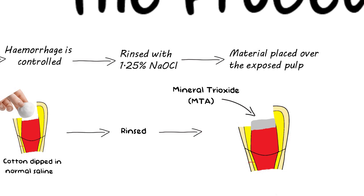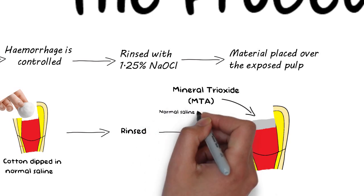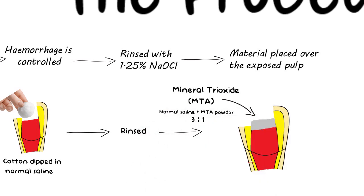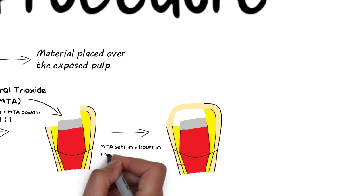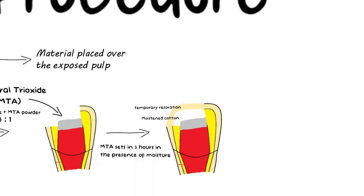MTA is prepared immediately before use by mixing powder with sterile water or saline in a ratio of 3 to 1. The mixture is then placed on the exposed pulp and patted in place with a moist cotton pellet. Because MTA sets in the presence of moisture over a 3 hour period, a wet cotton pellet is placed over the material and the cavity is filled with a temporary restoration material.